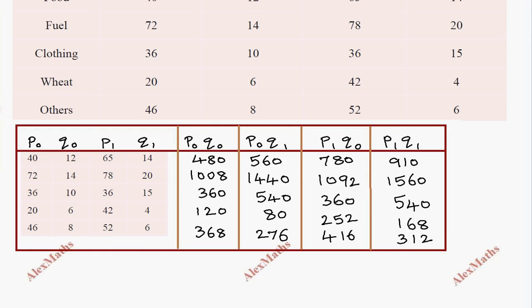Now calculate the summation. The first column gives Σ P₀Q₀ equals 2336. The summation Σ P₀Q₁ equals 2896.